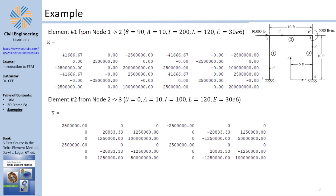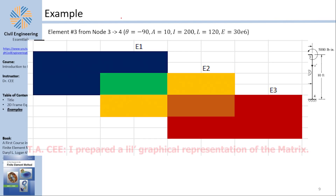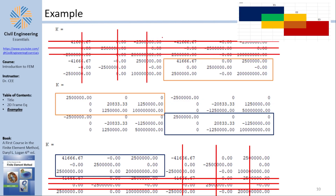Following the MATLAB calculations, global stiffness matrices are obtained for elements 1, 2, and 3. To assemble the global stiffness matrix, the three element stiffness matrices are added together. The first, second, and third rows and columns are dashed out because node 1 is fixed and node 4 is fixed, meaning no movement in x, no movement in y, and no rotation at those nodes — so they are eliminated by condensation.